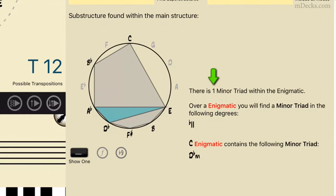There is only one minor triad contained in the enigmatic scale, and it's on the flat 2. In the key of C, that's a D-flat minor triad contained within the C enigmatic scale. Why is this useful?